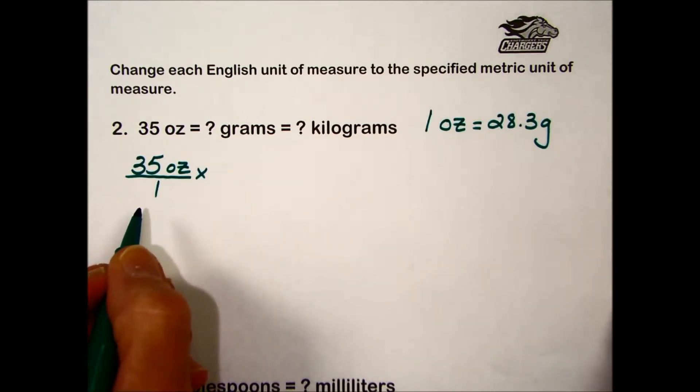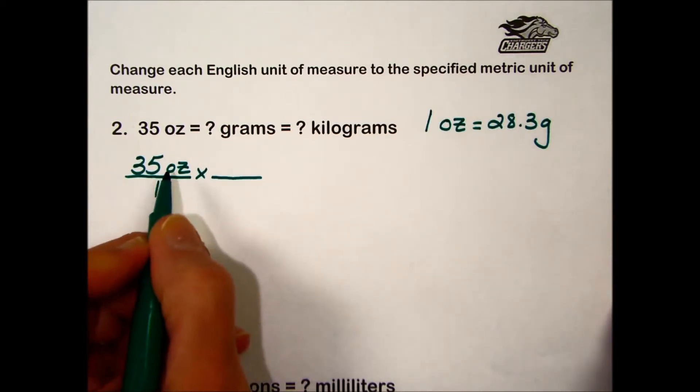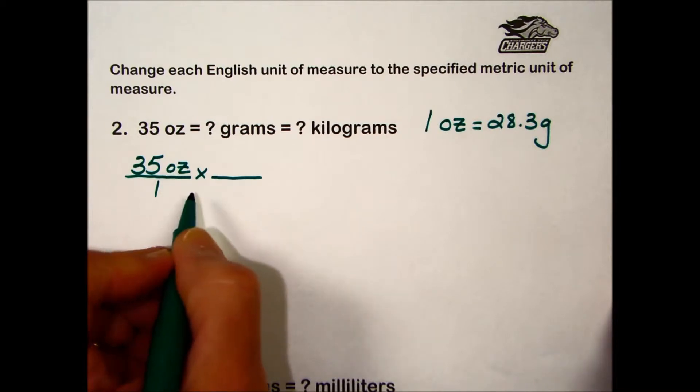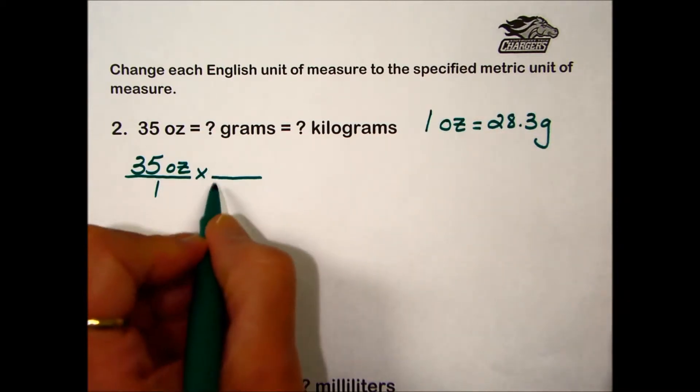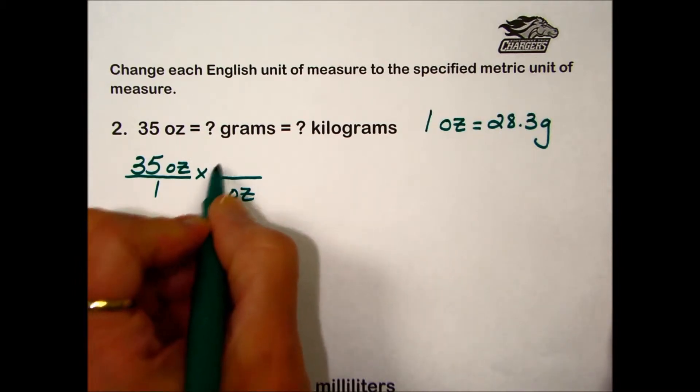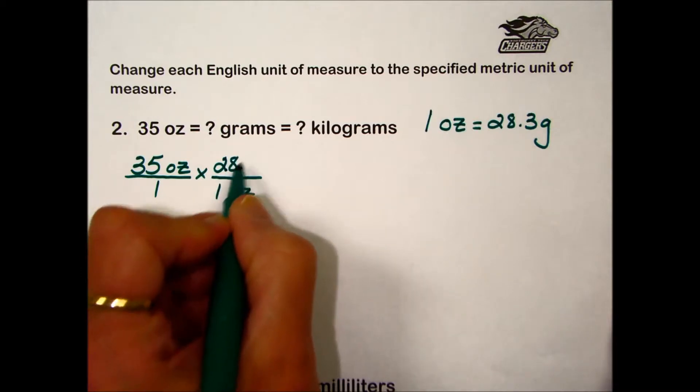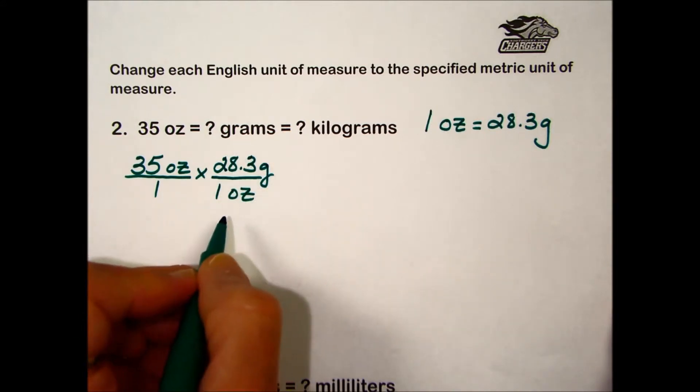We'll times it by one, but a very special one, our conversion factor fraction that allows us to convert ounces to grams. In the arrangement of the identity that was given, we will put the one ounce in the denominator so that the ounces cancel out when we multiply the fractions. And it means that we will put an equivalent value in the numerator, giving us this special one.